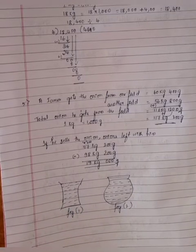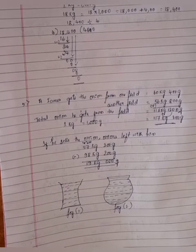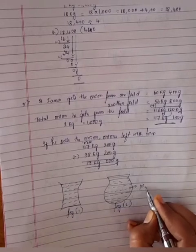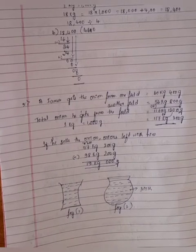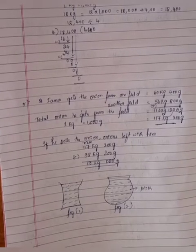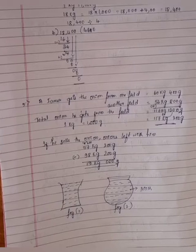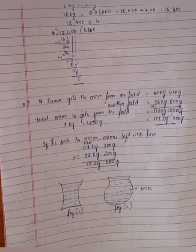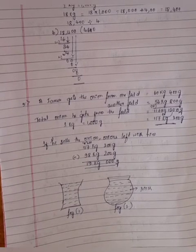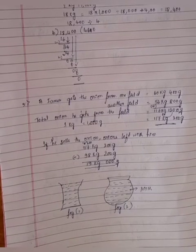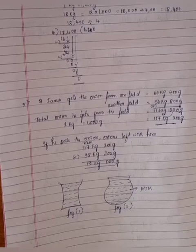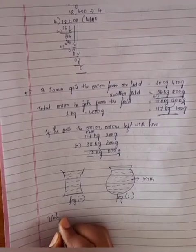In figure 1 and figure 2 are the two containers filled with milk. Can you tell which container contains more milk? Can you tell the approximate quantity of milk contained in each container? It is not possible. To know the quantity of milk contained in each vessel, we should measure the volume of milk. Now let us study what is volume.